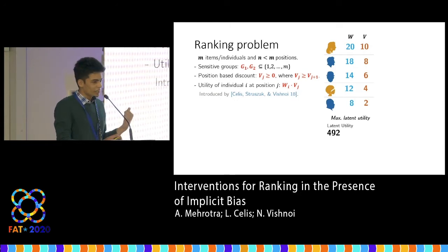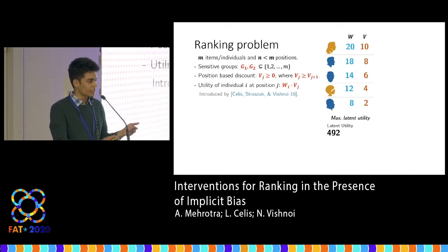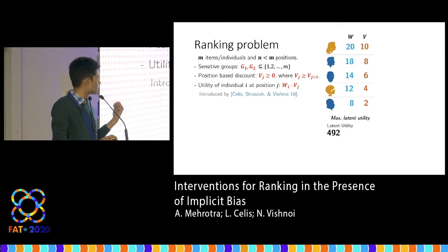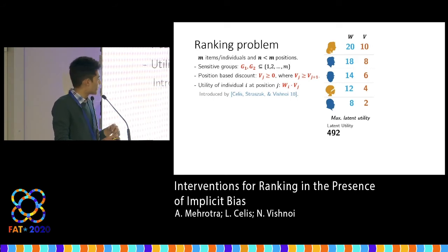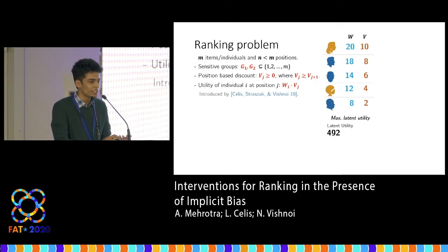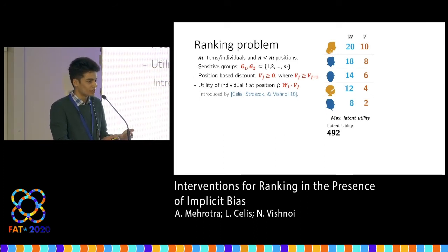We look at the ranking problem where we have to output a sorted list of N candidates. We partition the group of candidates into two parts, G1 and G2, where G2 is the underprivileged group. The utility we get by placing the i-th candidate at the j-th position is W_i times V_j, where V_j is a position-based discount which decreases as you go further in the ranking. This encodes the fact that people placed later in the ranking are less likely to receive positive outcomes.